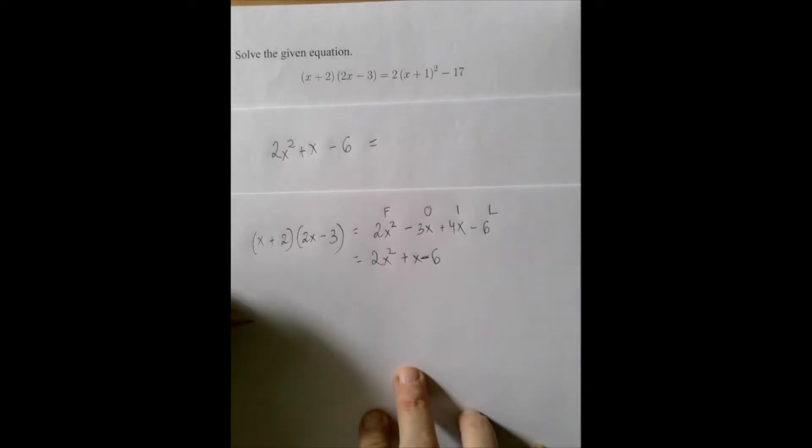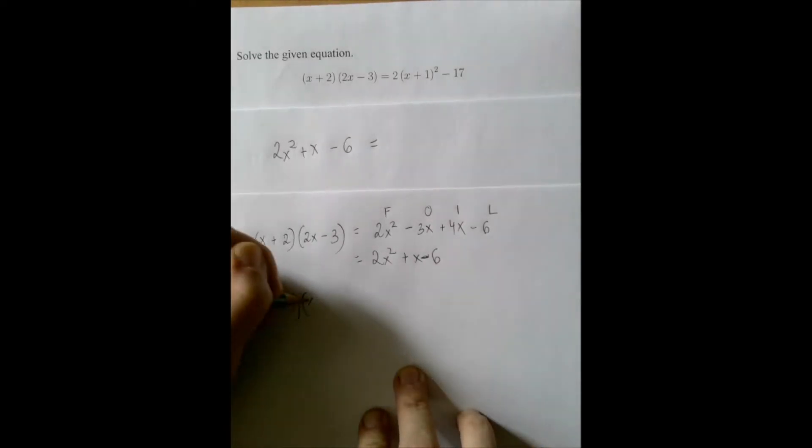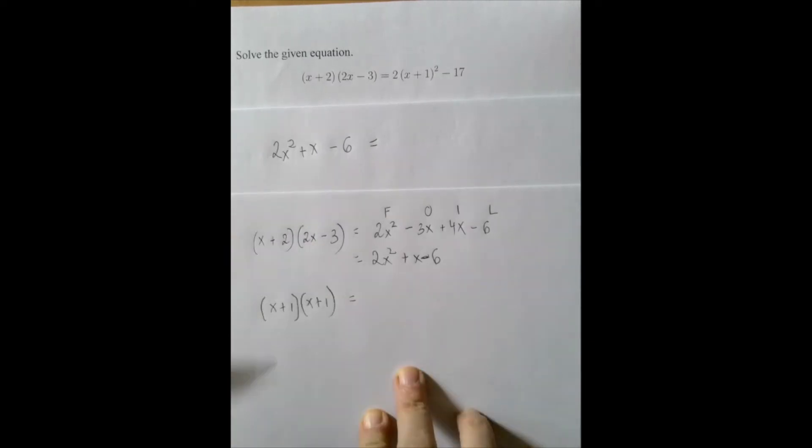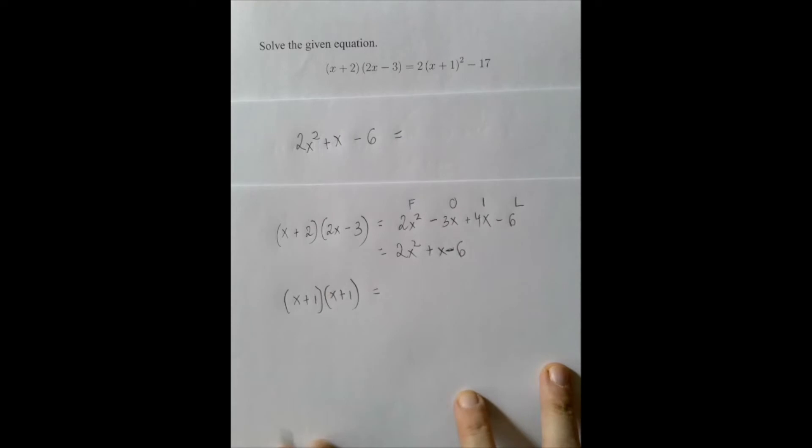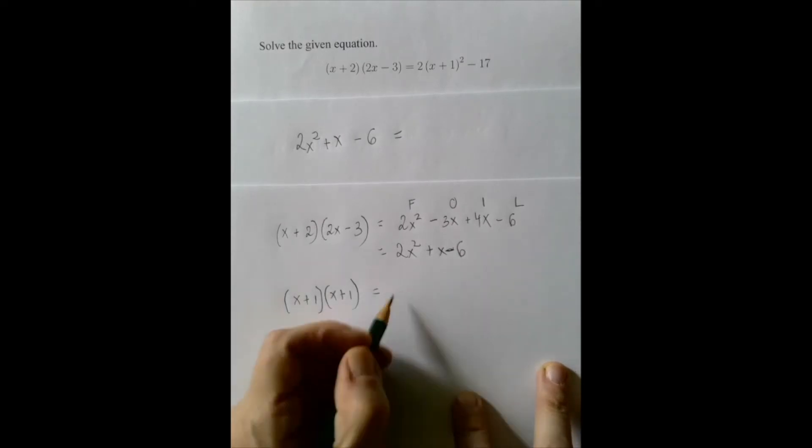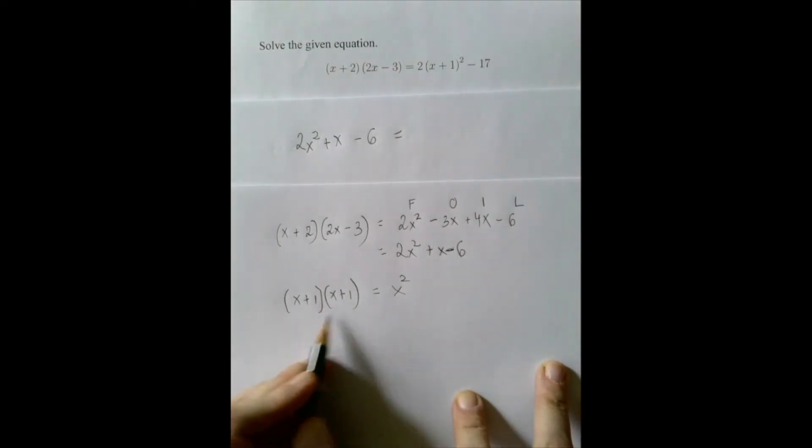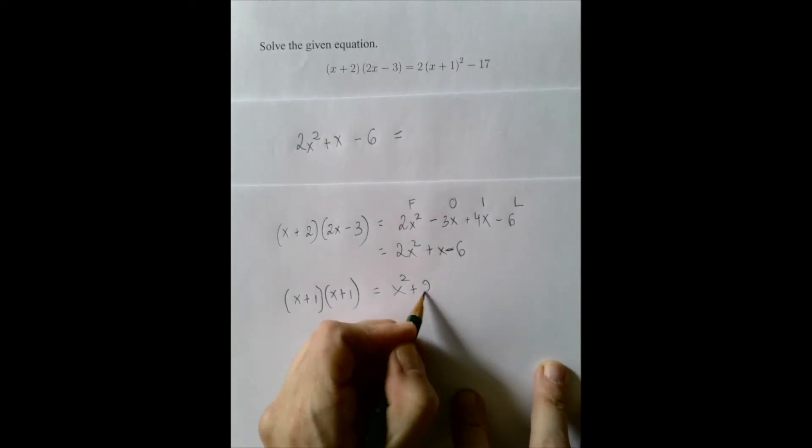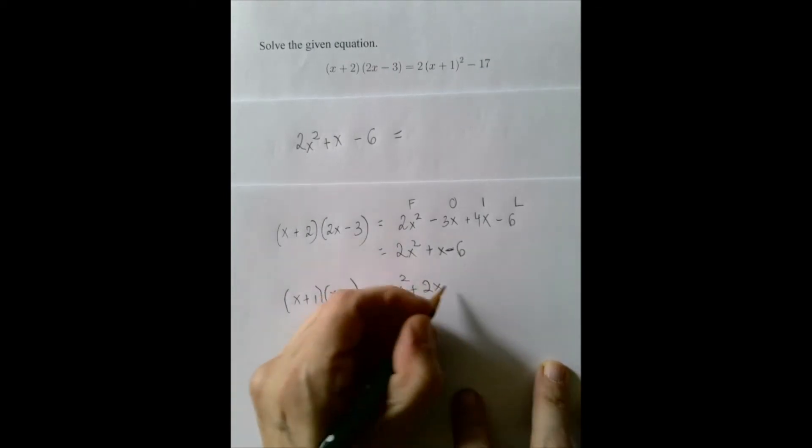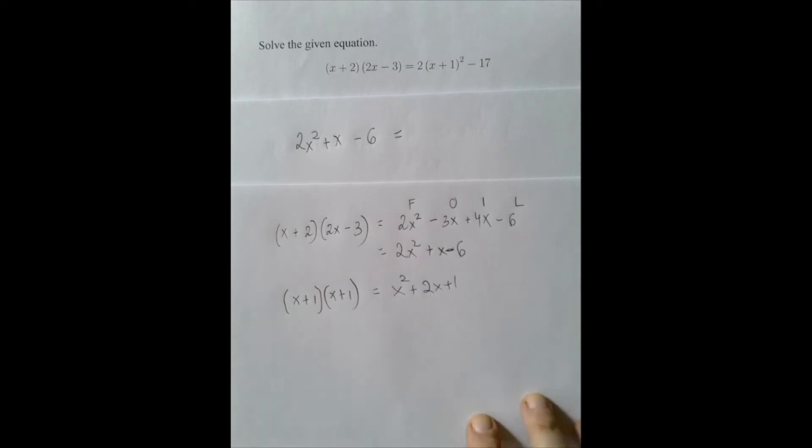On the other side, there is another multiplication, because x plus 1 squared is the same as x plus 1 times x plus 1. So again, we apply FOIL. First with first, that's x squared. And then there is a plus x, another plus x. So that's plus 2x plus 1. This is what we call a complete square.